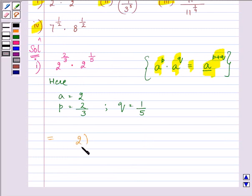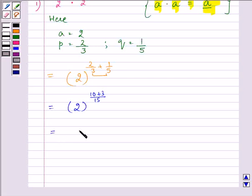It becomes 2 raised to the power 2 by 3 plus 1 by 5. Now this is a fraction which we need to simplify. We'll take 15 as our LCM. We have 10 plus 3, so we have 2 raised to the power 13 by 15. Since it can't be further simplified, 2 to the 13 by 15 is our required answer of the first part.